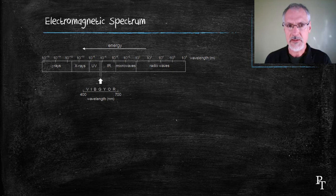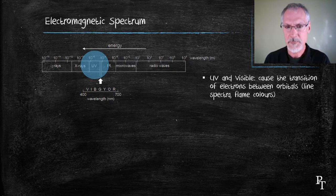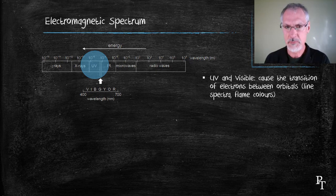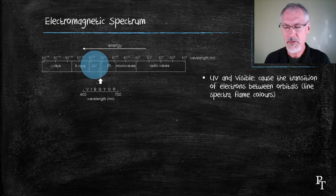When you subject matter to different forms of the electromagnetic spectrum, it behaves differently. Let's begin at the UV and visible part of the spectrum. Matter when subjected to UV light or visible light will cause the electrons to transition or move from one orbit to the other. We saw this earlier in the course when we looked at flame colors or the line spectrum of hydrogen.